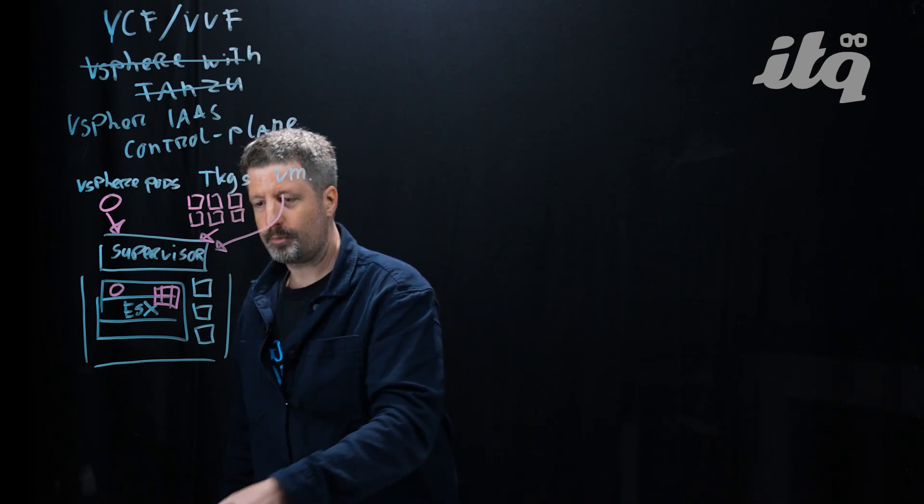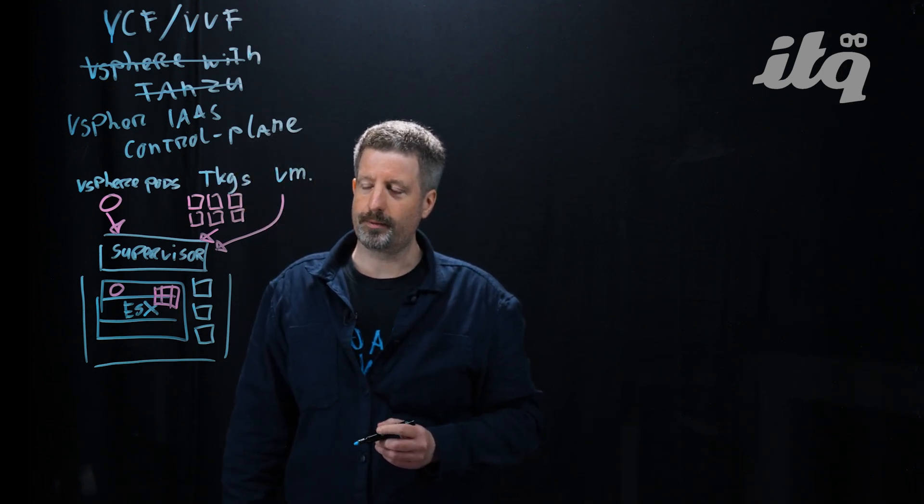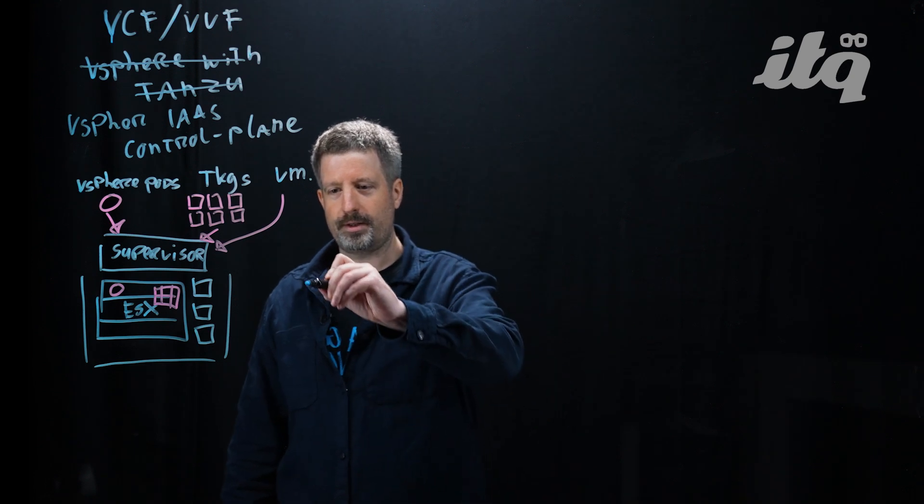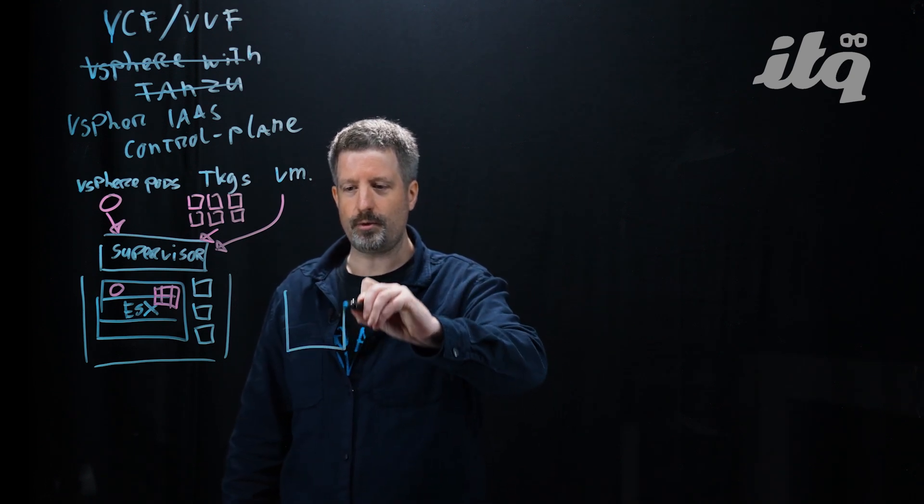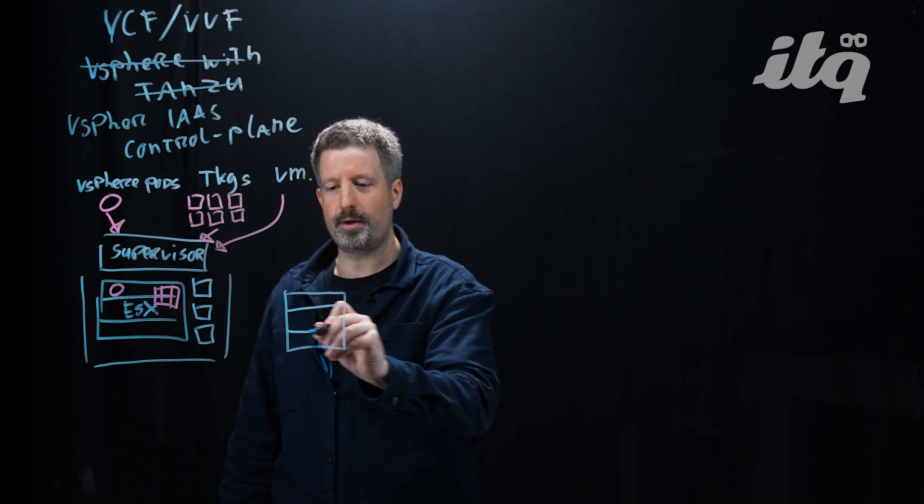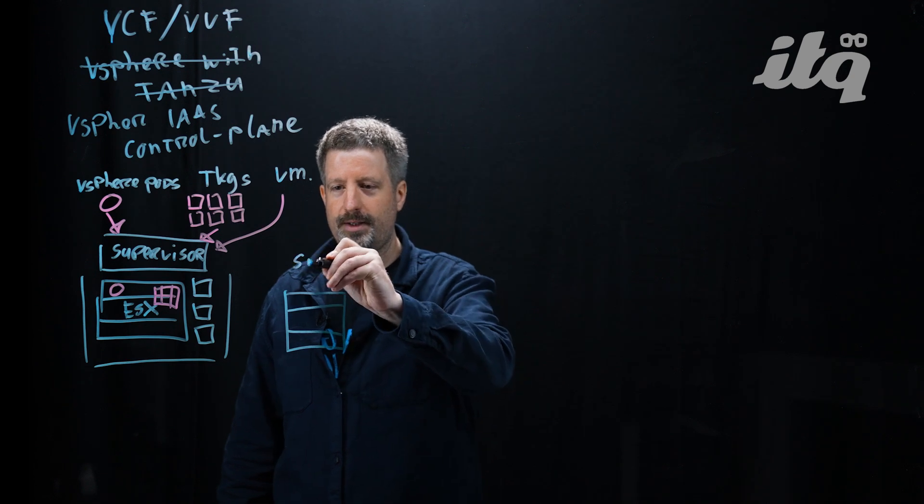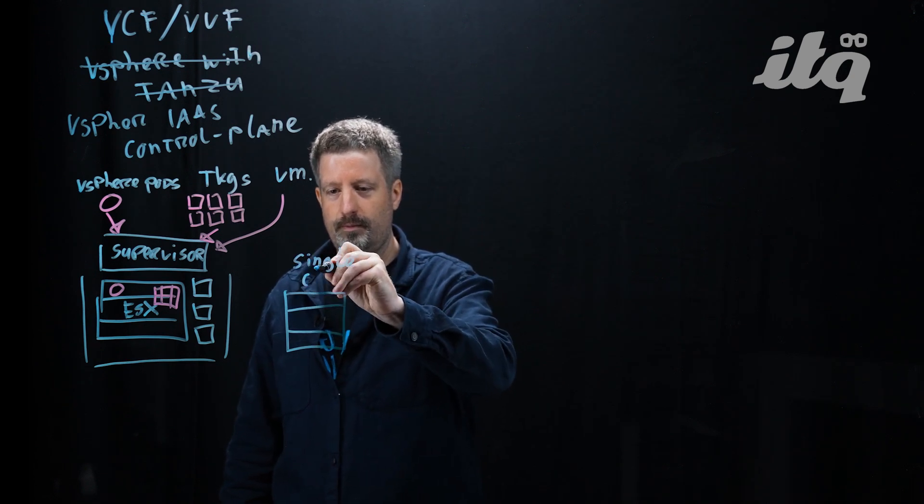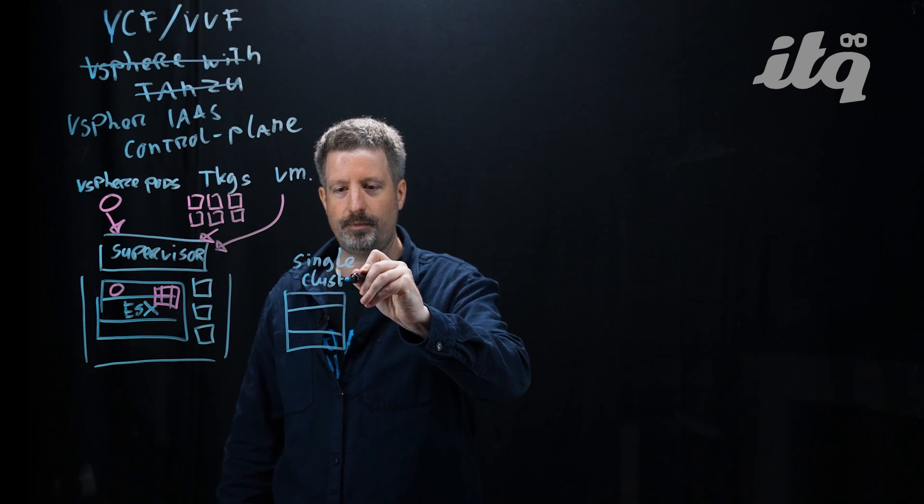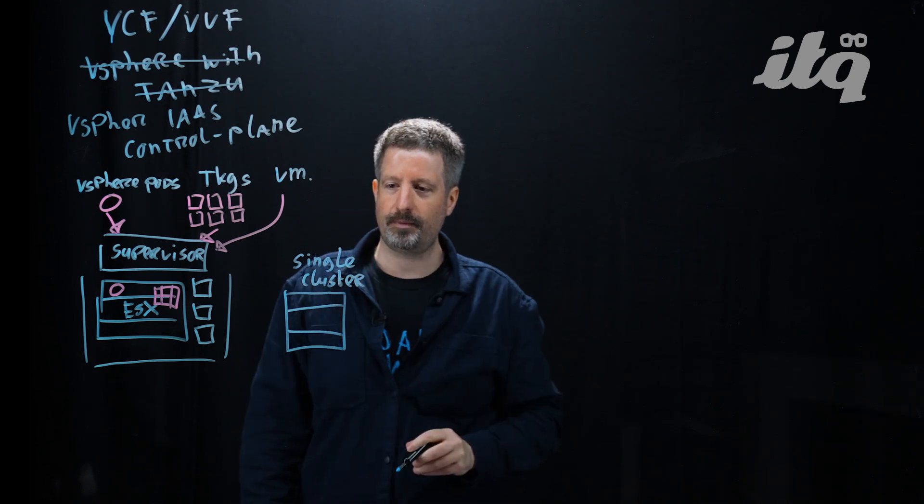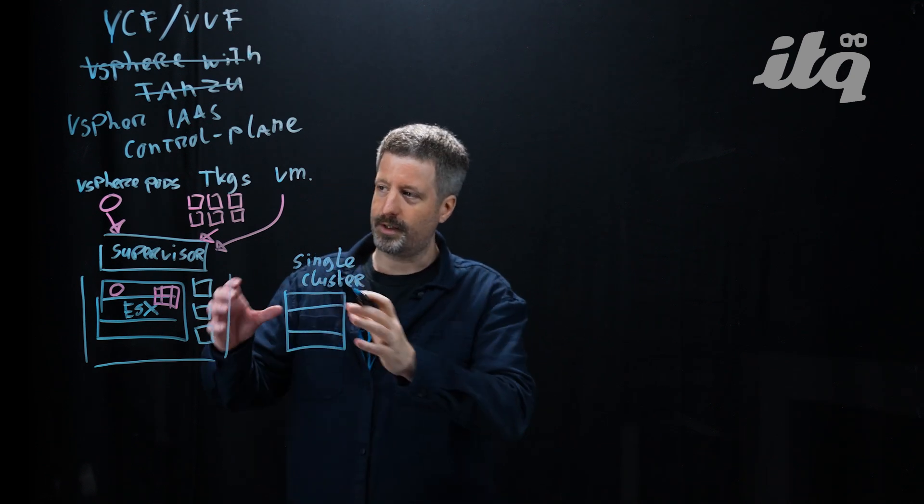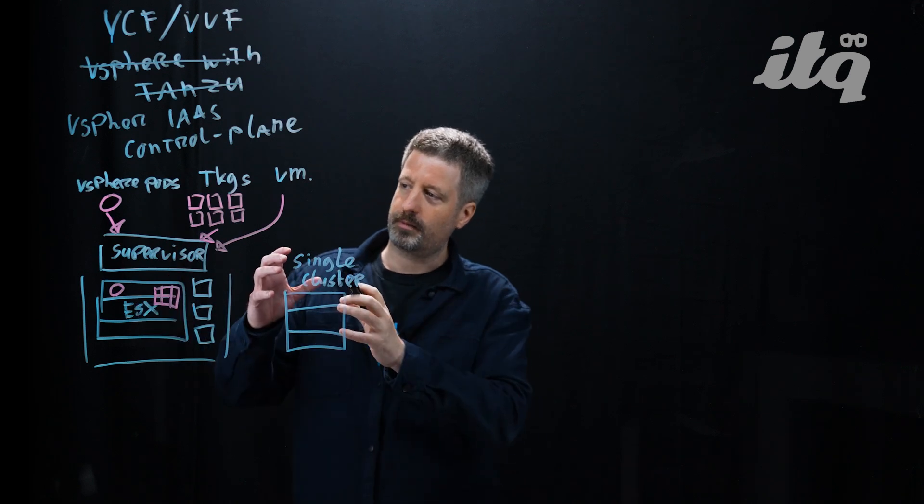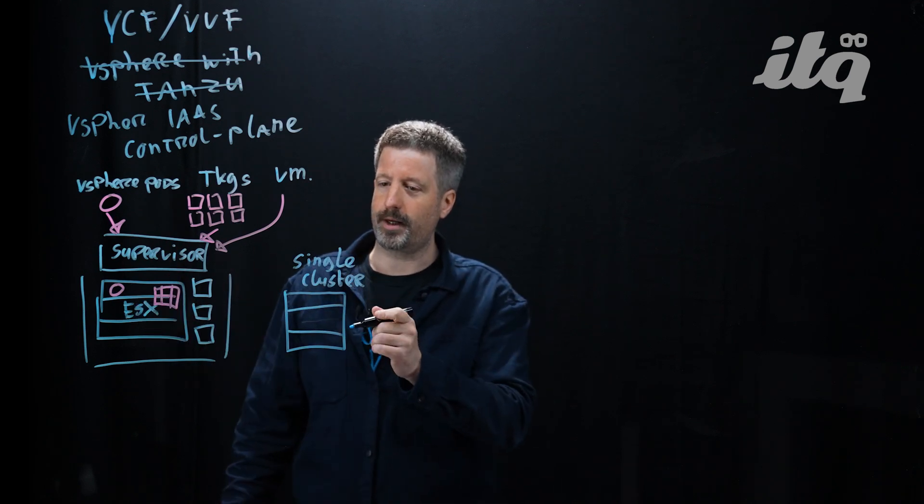So what kind of deployment topologies can we use with the ES control plane? Well, there are different ways we can install this. The most straightforward is that we have a single cluster deployment. In this mode, we take a single ESX cluster and we enable it for Kubernetes native workload management using the ES control plane.